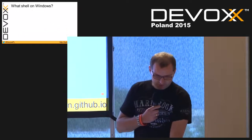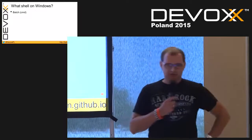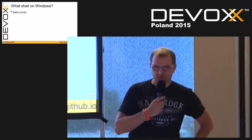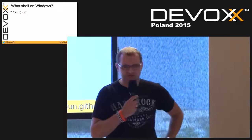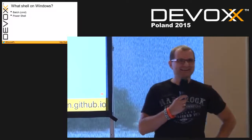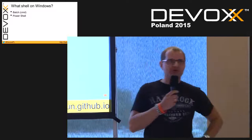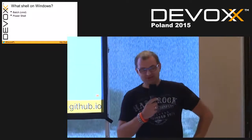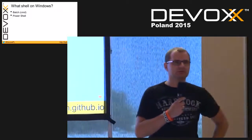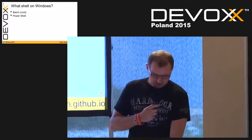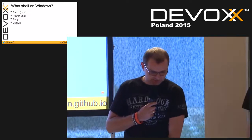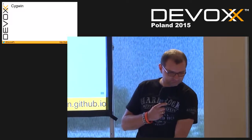So what kind of options do you have on Windows? You have Batch — but if you tell me you can be productive in Batch, show me how you do full-screen, copy-paste, syntax highlighting, and so on. You can use PowerShell, and if you prefer to be a C# developer who knows the Windows API, it works well for you. You can use PuTTY, but we want to be productive on localhost. So we have Cygwin.